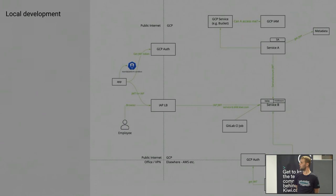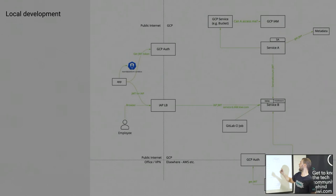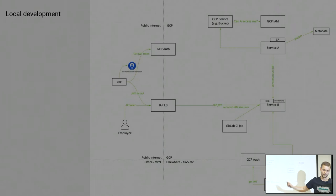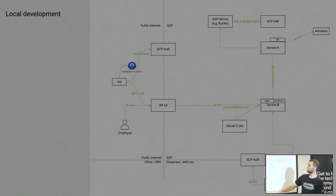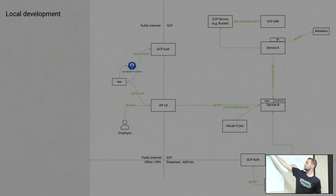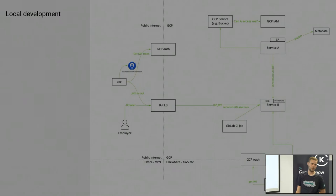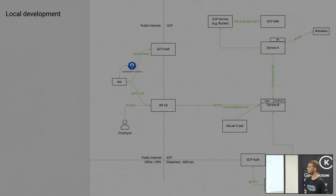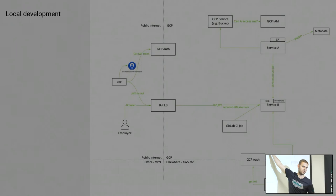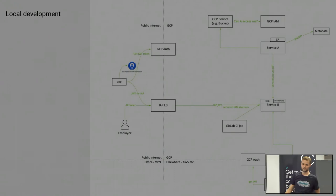Next case: local development. Say I'm a developer of service A and I want to run it on my laptop. The laptop is not in the VPC — it's on the public internet, at home, I don't need to connect to VPN. What can the application do? Pretty similar to the bare metal case — talk to GCP authentication, get a token, pass it to the IAP load balancer. It's allowed to talk to the service. The only config the application needs is whether to ask the GCP authentication or the metadata server — that depends on where it's running. Simple, and it works.